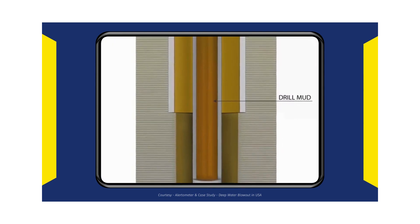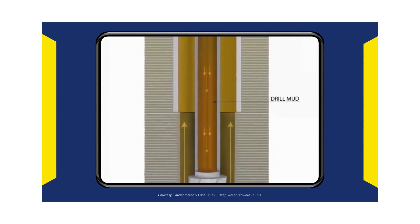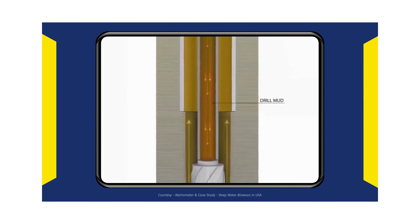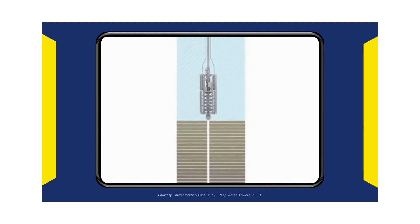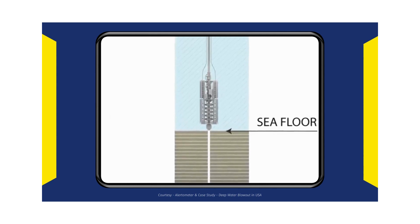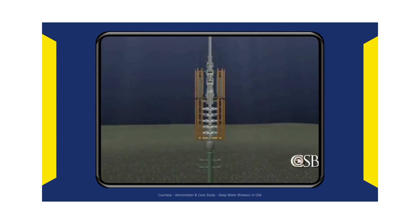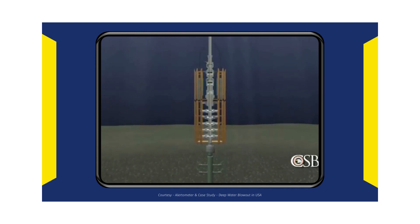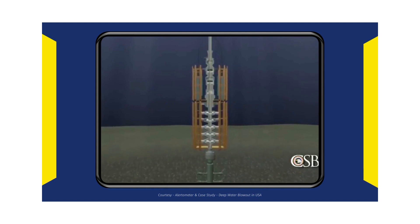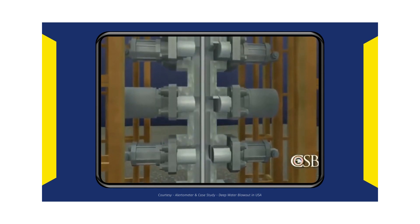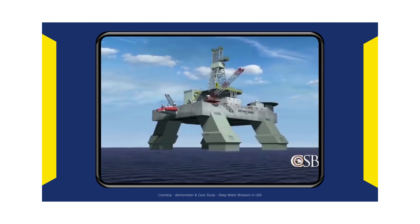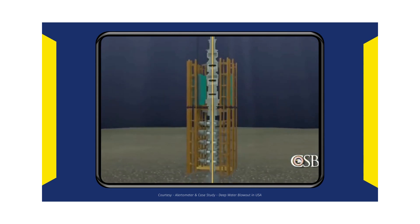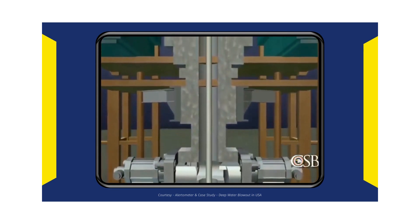To prevent kicks, drillers pump a dense slurry called drilling mud into the well, creating a barrier between the undersea oil and gas and the piping that leads to the rig. If this mud barrier fails or is somehow removed, the safety of the drilling crew depends on a critical piece of equipment located on the sea floor called the blowout preventer, or BOP. The BOP is a complex, electrically and hydraulically powered device essential for controlling the well and, in an emergency, preventing a disaster on the platform above. The BOP is connected to the rig by a large diameter pipe called a riser.